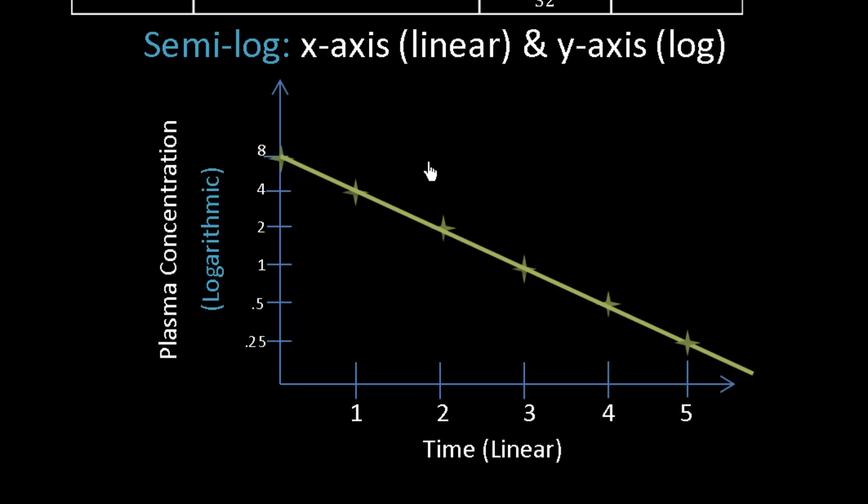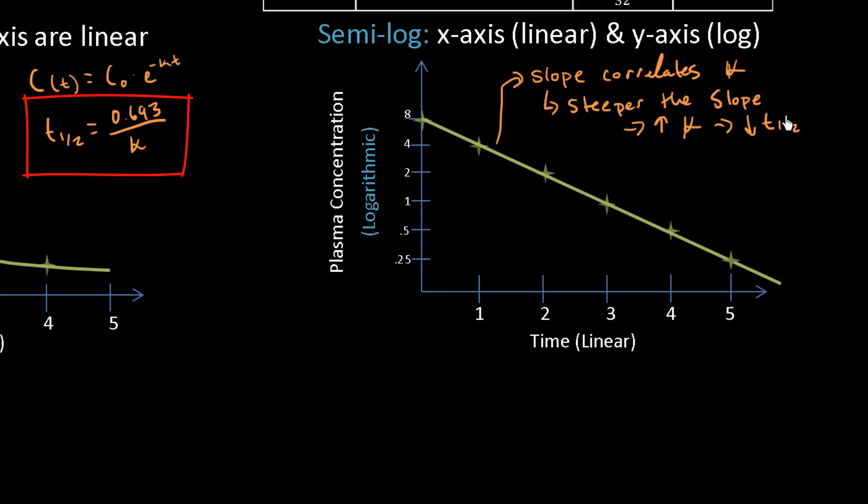Now, this graph helps us in a couple of ways. First off, I want you to note that this slope correlates very well with that first order elimination rate constant. And maybe in that future video where I talk about how half-life is derived, I'll tell you how you can solve for k. But just know that it correlates with it and for your purposes, you can just say the slope is k. And so, the point here is that the steeper the slope, this increases the first order elimination rate constant k. And as a result, I'm eliminating faster and I decrease the half-life. Remember, there is an inverse relationship between the two.